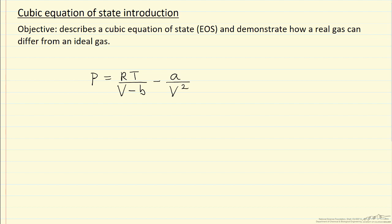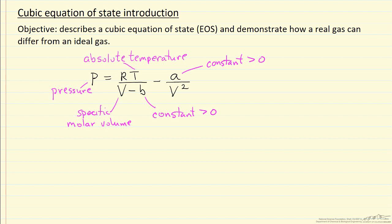So this is the Van der Waals equation. The constant B relates to the fact that molecules actually occupy space. In the ideal gas law, we assume molecules occupy no space and we can compress a gas down as far as we'd like. But for a real gas, as we compress and get molecules close to each other, we can't get the volume close to zero. So as V gets close to B, the term V minus B becomes small, which means the pressure will end up being much higher than ideal gas pressure.